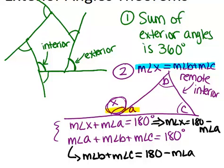Now what you should notice here is that we have 180 minus angle A in both cases, which means that the measure of angle X has to equal the measure of angle B plus the measure of angle C because they both equal 180 minus the measure of angle A.